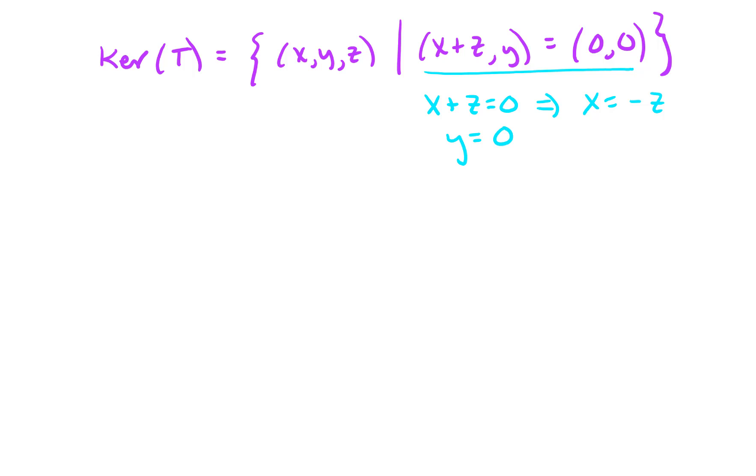So the kernel of T looks like the set of vectors (x, y, z). We know the first component, if it's x, then the third component must be negative x, and y is zero. So what this condition tells us is that x and z are related: x equals negative 1 times z, or they're equal to each other but there's a sign change. So x is any real number.